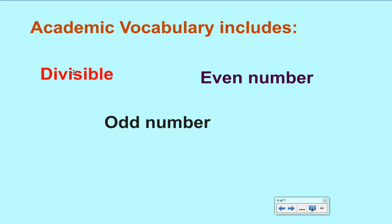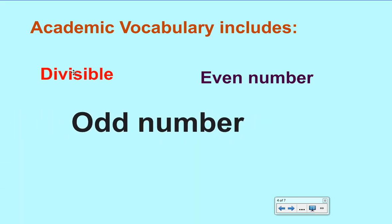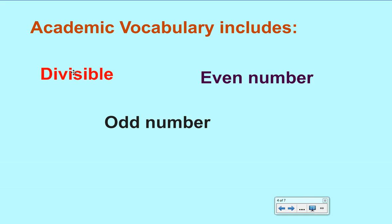What is an even number? Any whole number that ends in a 0, 2, 4, 6, or 8 would be an even number. And finally, what is an odd number? An odd number is a whole number that ends in 1, 3, 5, 7, or 9.